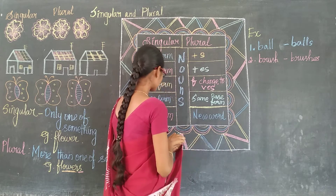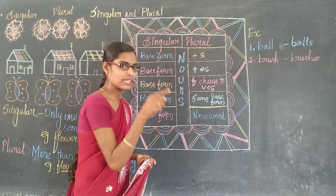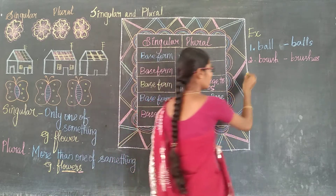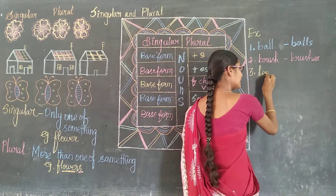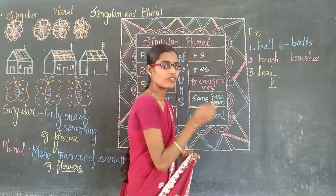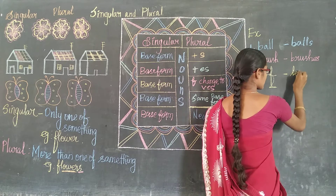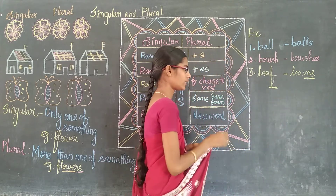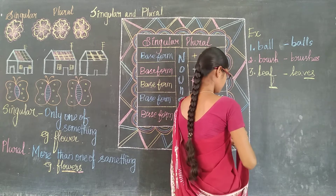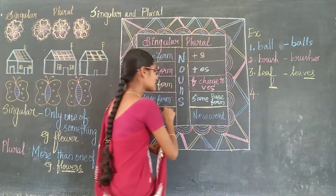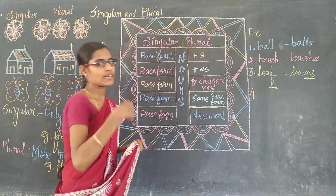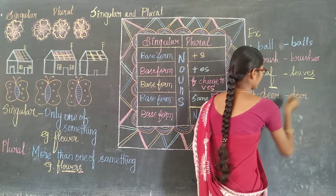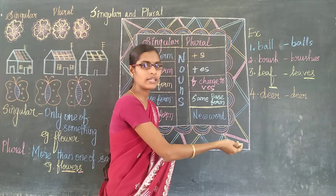Look at the third rule — if the noun ends in F, we have to change this F into VES. Look at the third one: leaf — just look at the last letter, F. We have to change this F into VES. Instead of F, we return VES — leaves. And the fourth one — same base form, which means same for singular and same for plural. Example: deer — same for singular and same for plural also.